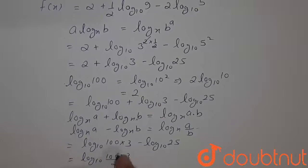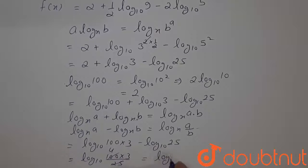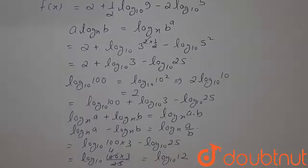So this 25 will cancel out 100, 4 times, 4 into 3 that is 12. So log to the base 10, 12. So this equation has been represented as a single logarithm. This is our answer. Thank you.